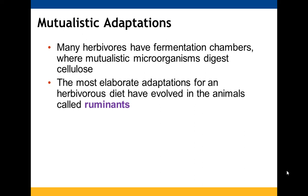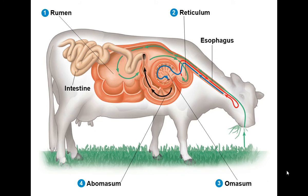Mutualistic adaptations involve fermentation chambers. With ruminants — such as cows — microorganisms are involved in breaking down undigested plant material. A mutualistic relationship develops: the cow takes in grass or plant material, which enters the rumen where it is partially broken down. The cow then regurgitates it, chews it again to break it down more — this happens in the reticulum. Once it comes back in, it moves into the omasum, which breaks it down further, and finally it enters the abomasum and moves through the rest of the digestive system.